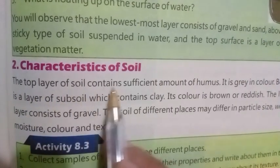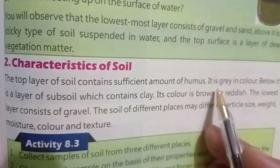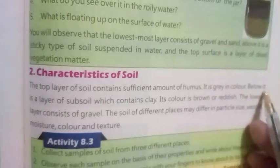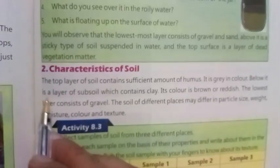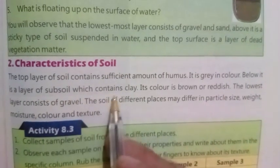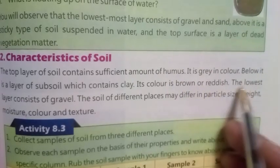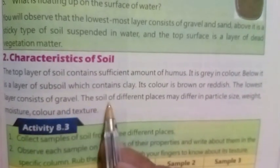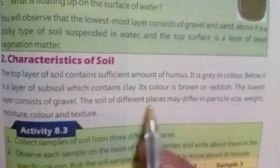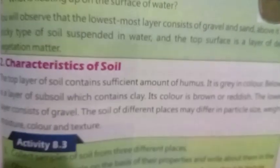The top layer of soil contains a sufficient amount of humus; it is grey in color. Below it is a layer of subsoil which contains clay; its color is brown or reddish. The lowest layer consists of gravel. The soil of different places may differ in particle size, weight, moisture, color, and texture.